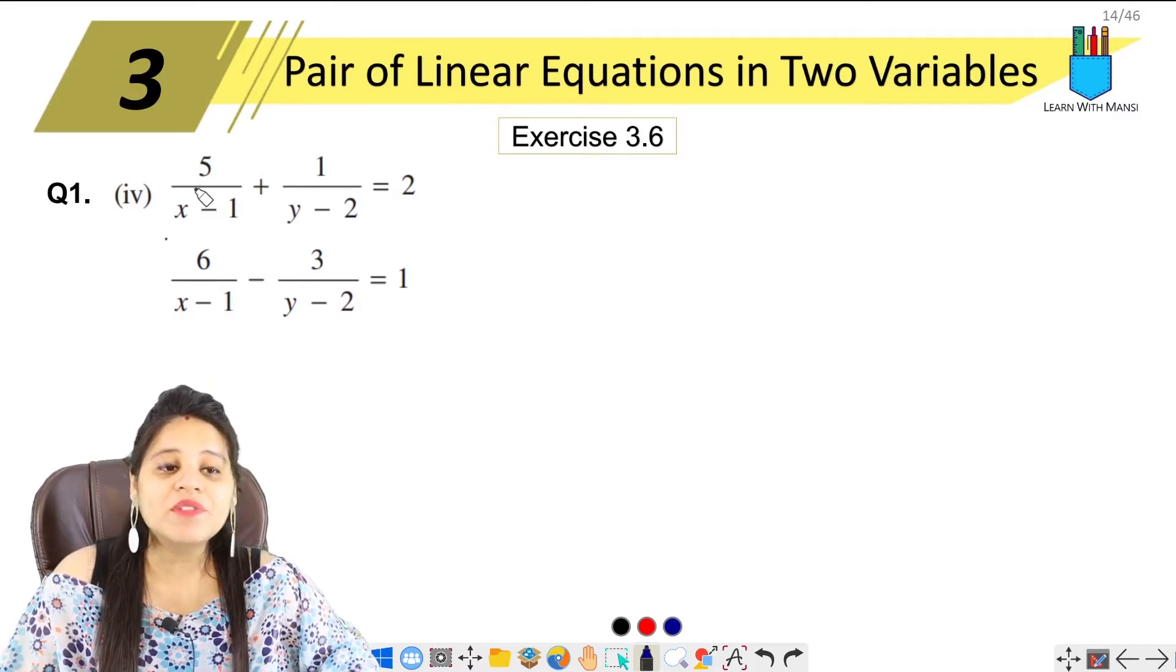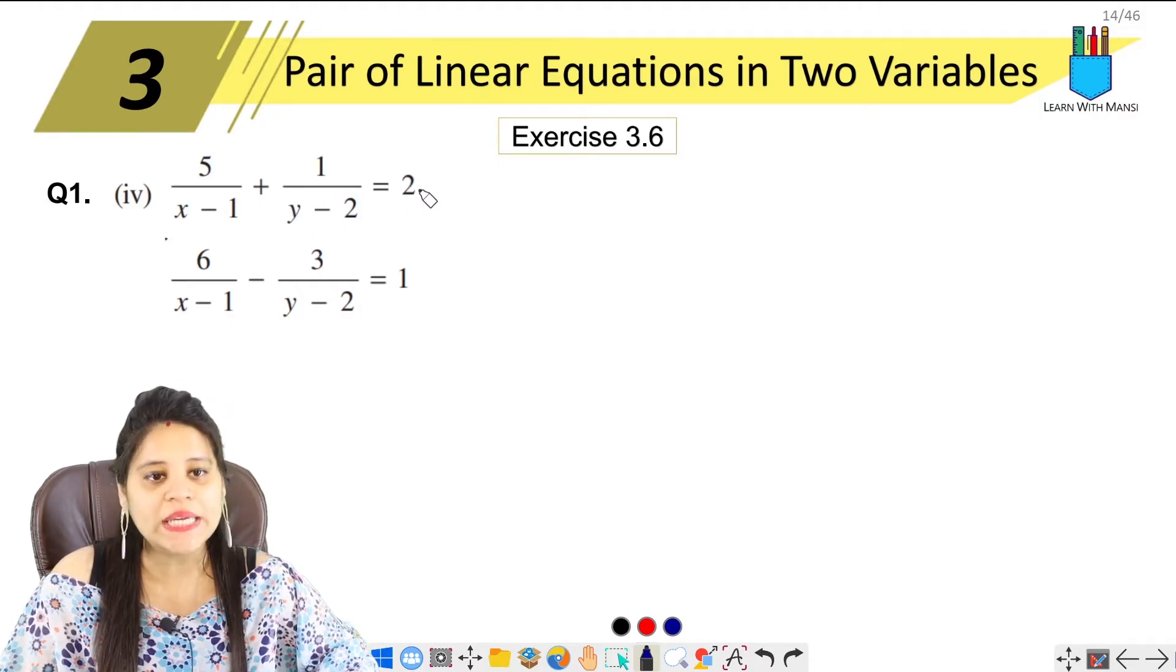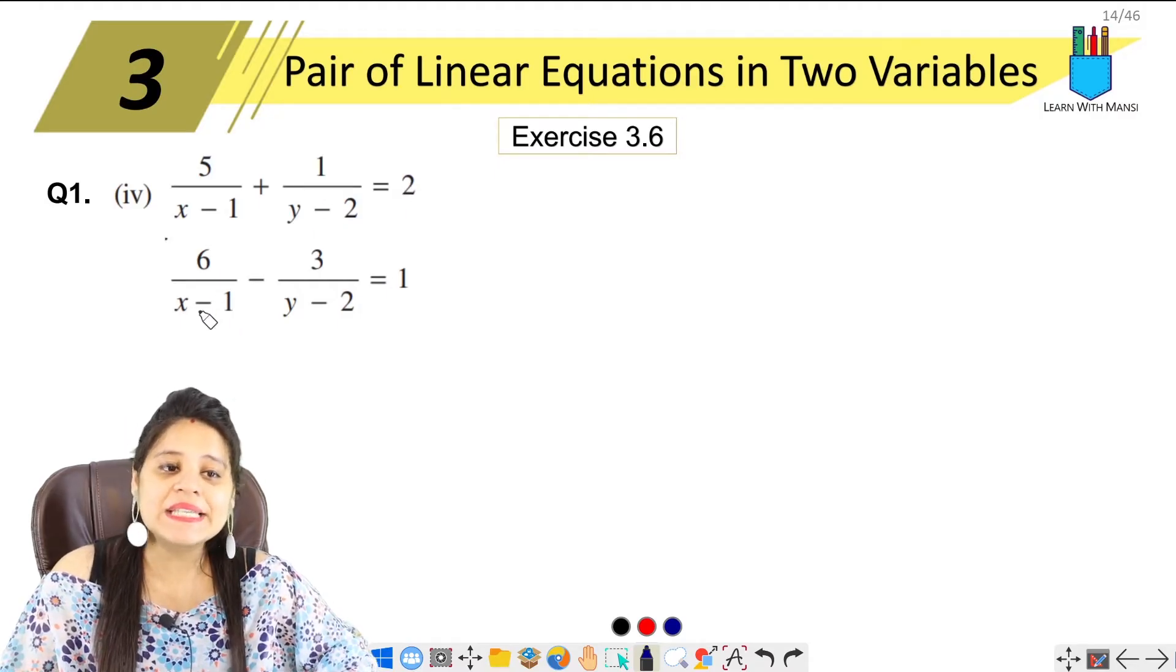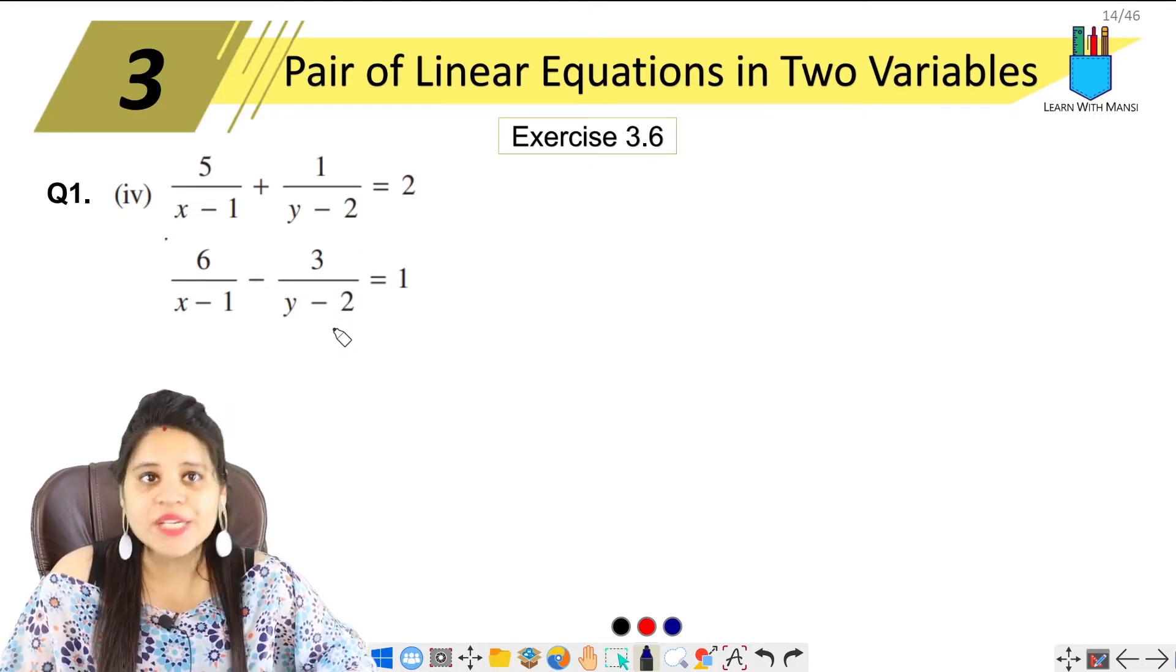Fourth part is 5 upon x minus 1 plus 1 upon y minus 2 equals to 2, and 6 upon x minus 1 minus 3 upon y minus 2 equals to 1.